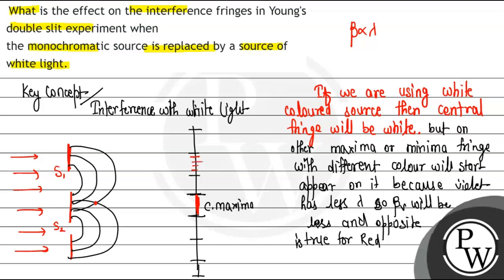So that is the effect of using a white light source instead of a monochromatic source in the interference experiment. I hope you understand this. Best of luck. Thank you.